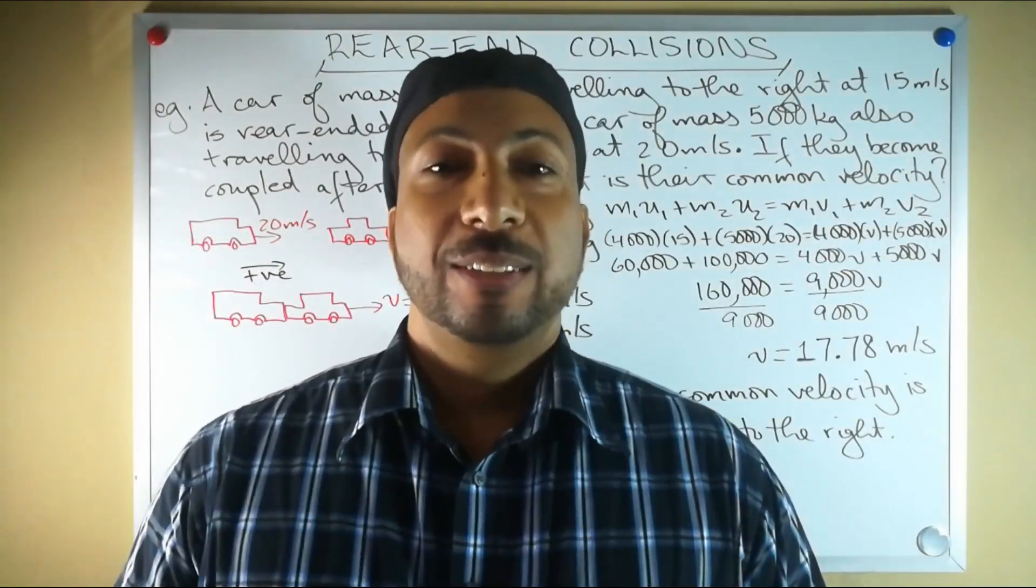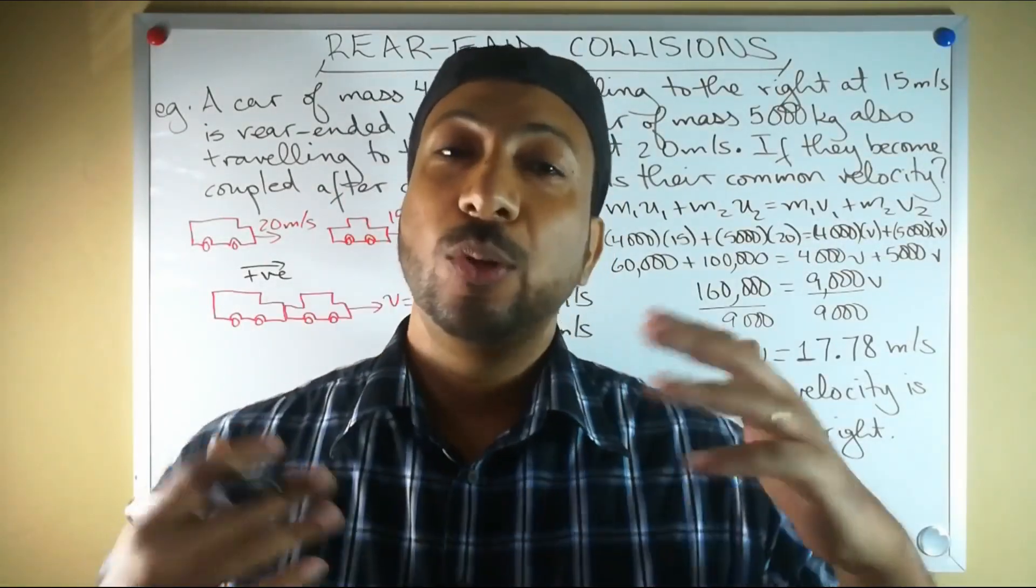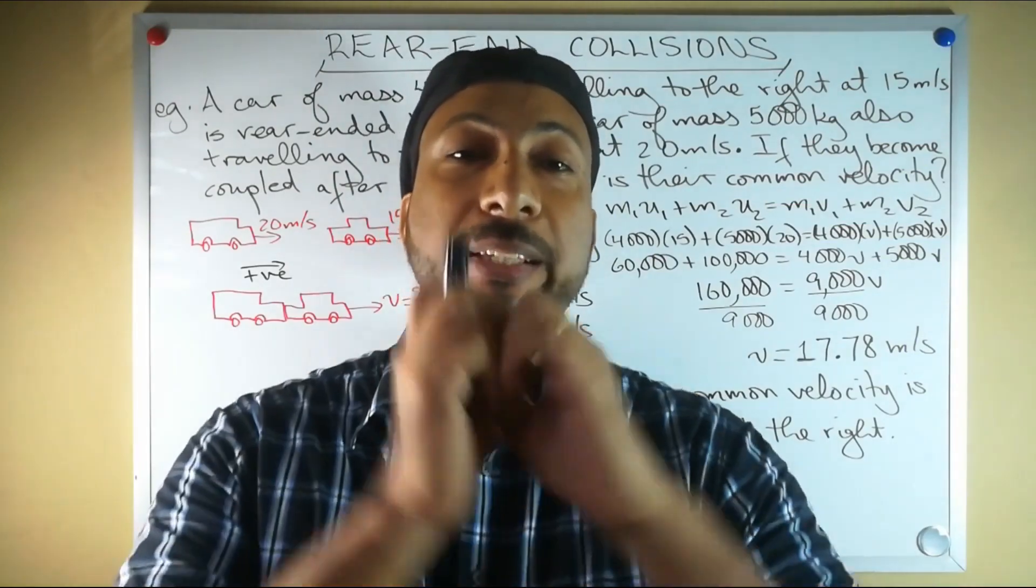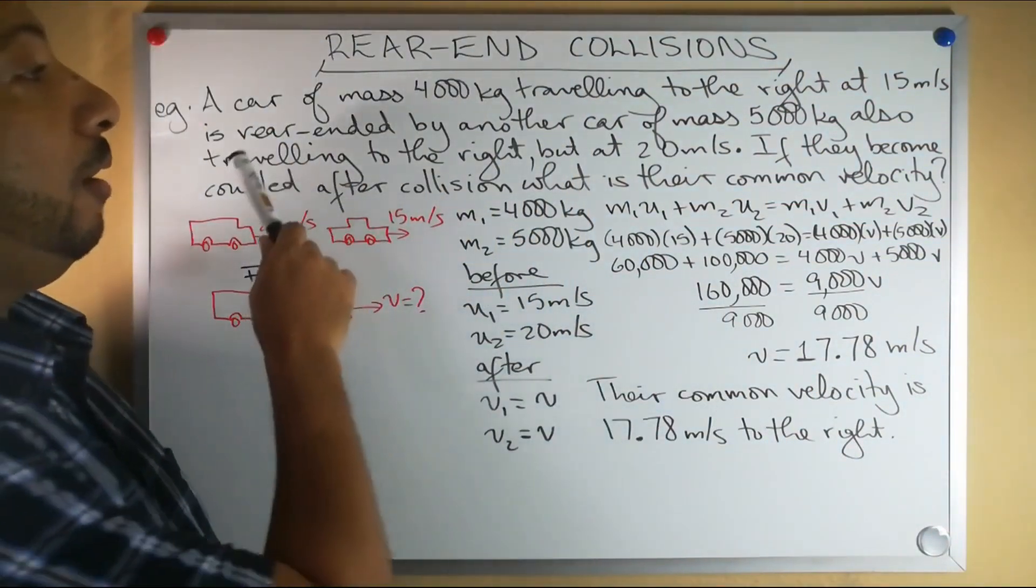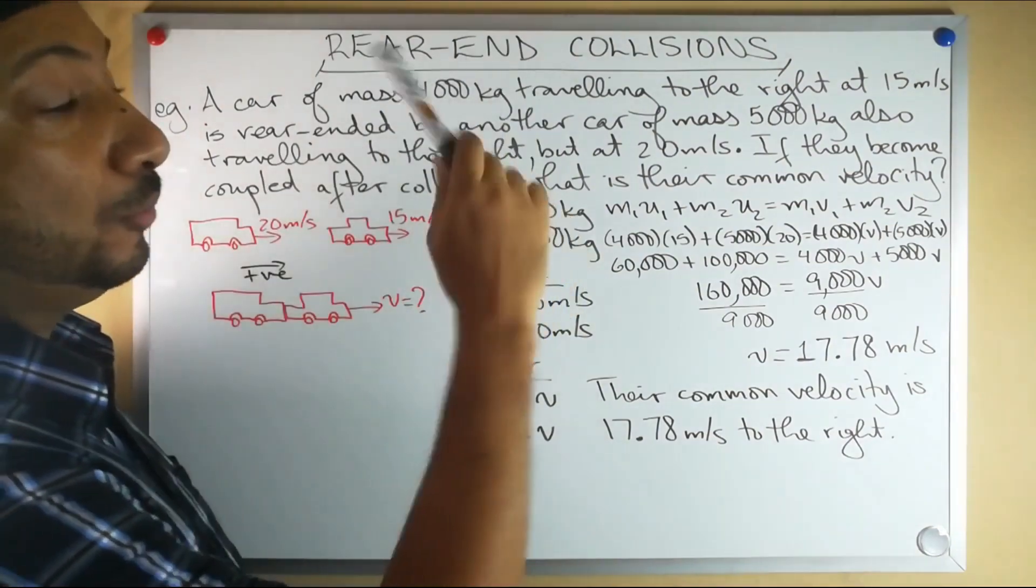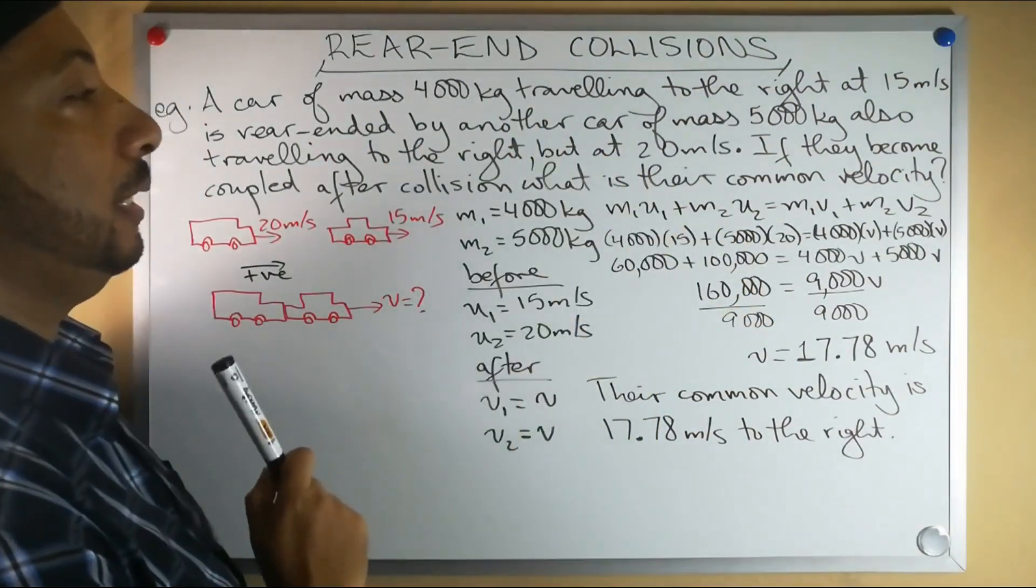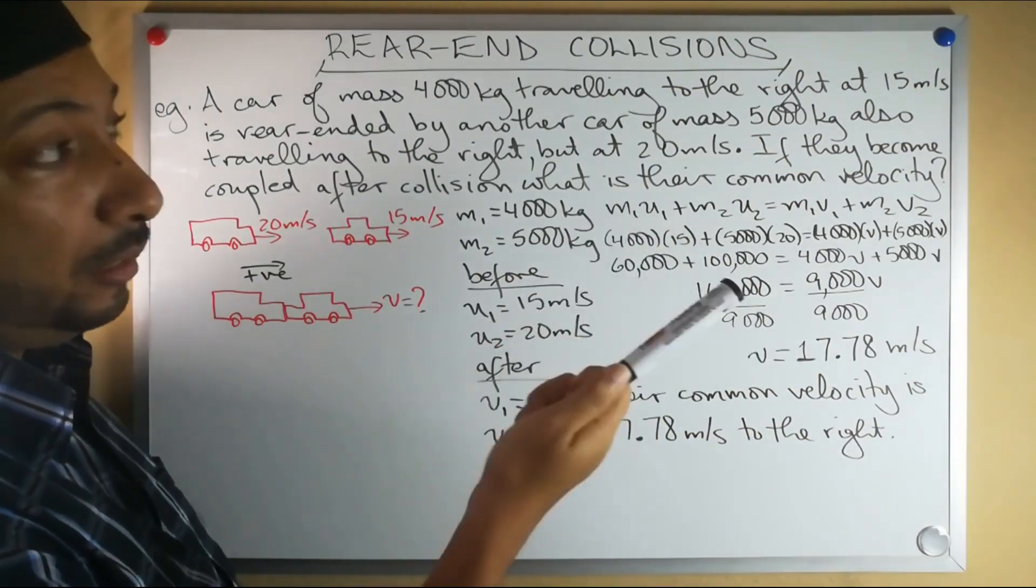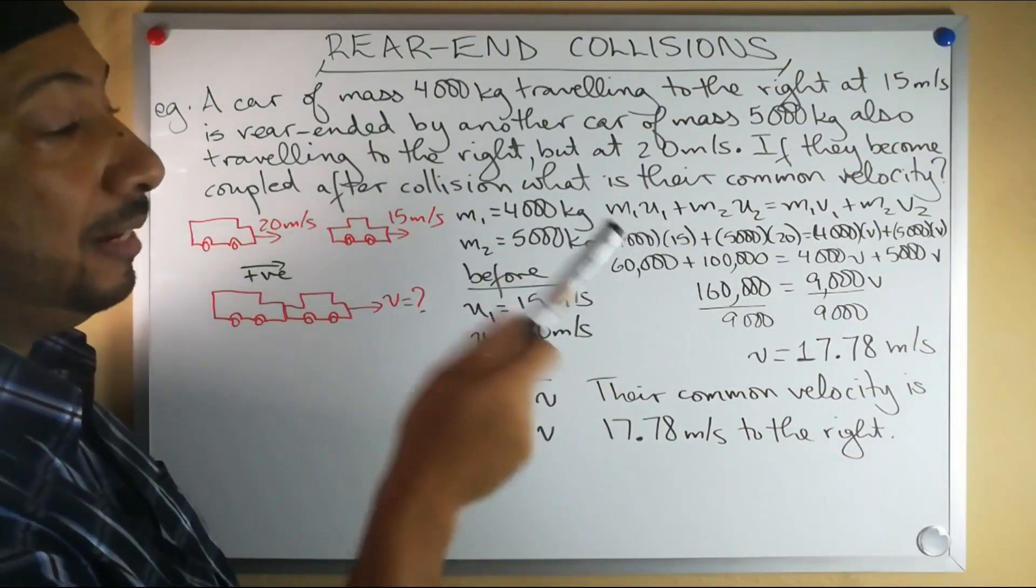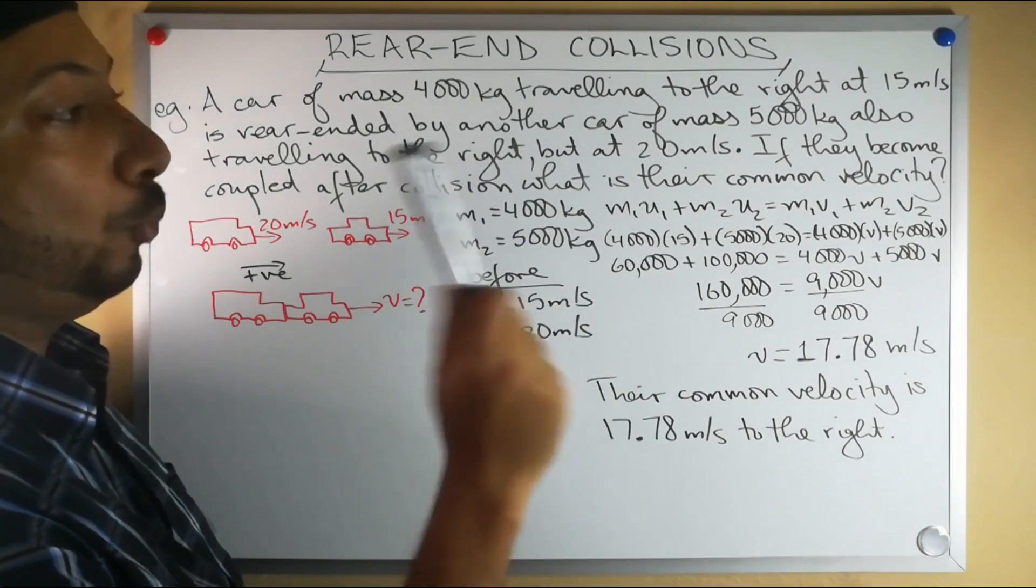All right, so now in this lesson we look at rear-end collisions and explosions. Our first example here: we have a car of mass 4,000 kilograms traveling to the right at 15 meters per second. It is rear-ended by another car of mass 5,000 kilograms also traveling to the right but at a greater speed of 20 meters per second.